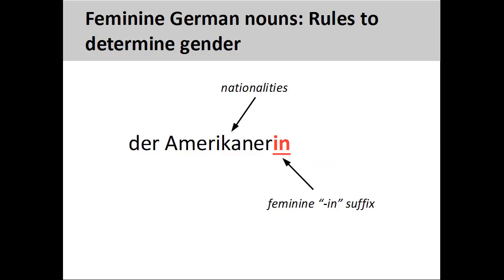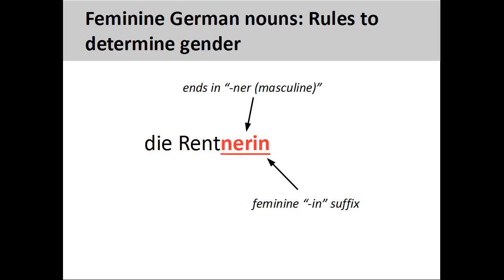Nationalities are also masculine nouns, but we can change these into feminine nouns by adding the same –in suffix. 'Amerikanerin,' meaning American woman, is a feminine noun. Masculine nouns ending in –ner can also be made feminine by adding the –in suffix. 'Rentnerin,' meaning woman pensioner, is a feminine noun.